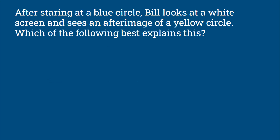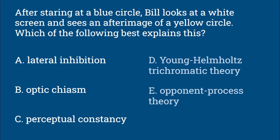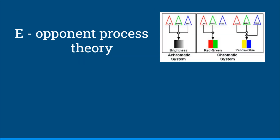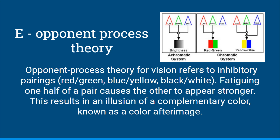After staring at a blue circle, Bill looks at a white screen and sees an after image of a yellow circle. Which of the following best explains this? Lateral inhibition, optic chiasm, perceptual constancy, Young-Helmholtz's trichromatic theory, or opponent process theory. The answer is E, opponent process theory. Opponent process theory for vision refers to inhibitory pairings — red versus green, blue versus yellow, and black versus white. Fatiguing one half of a pair causes the other to appear stronger, resulting in an illusion of a complementary color known as a color after image.